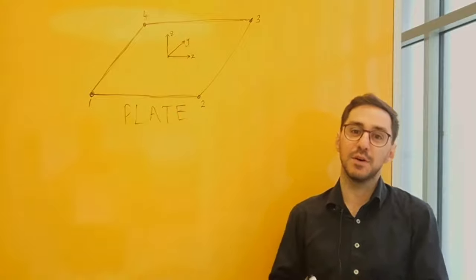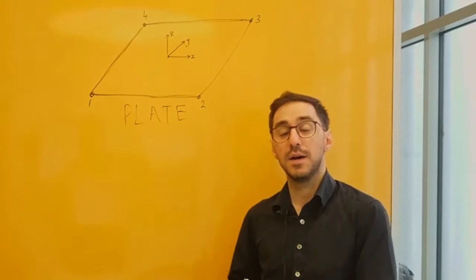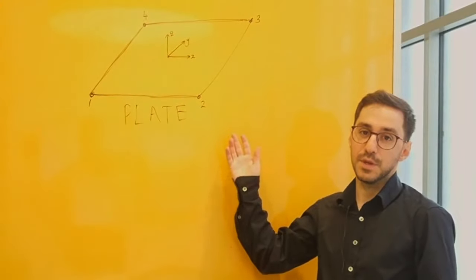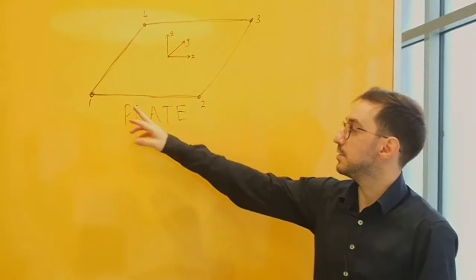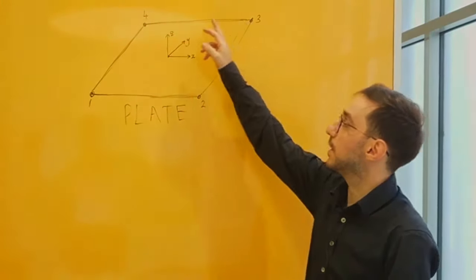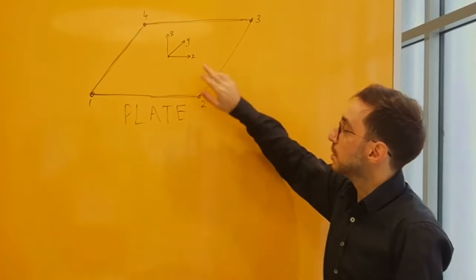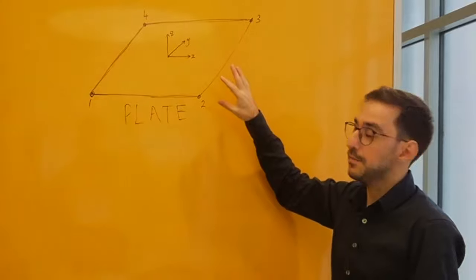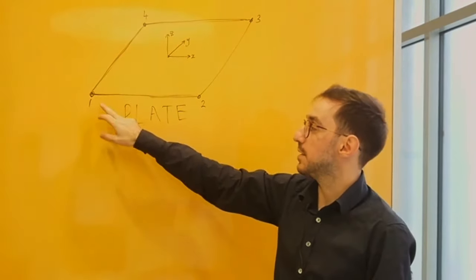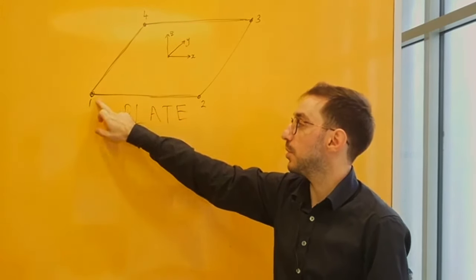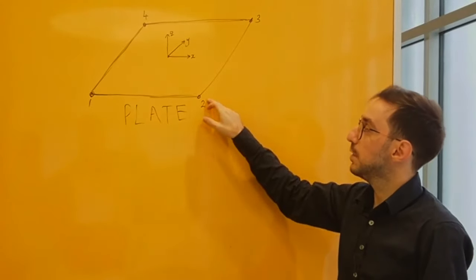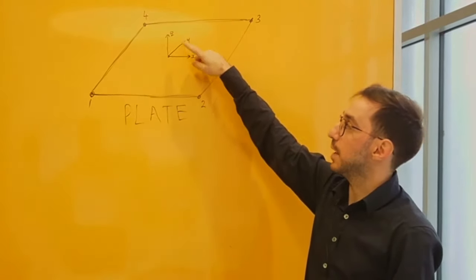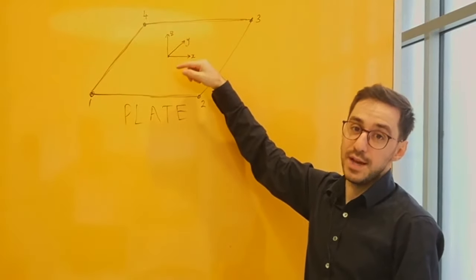The first aspect of plates that you need to understand to be able to interpret the results is how the local axes work. I've drawn a plate here — this is node 1, node 2, node 3, and node 4 of the plate. The local x-axis and the local y-axis are in the plane of the plate, and the x-axis is dictated by the direction from node 1 to node 2. The x and y axes are in the plane of the plate, and the normal axis of the plate is always the z-axis.